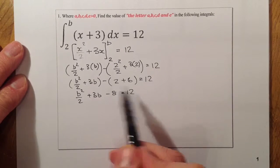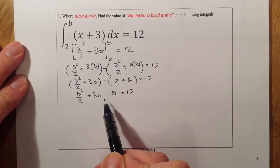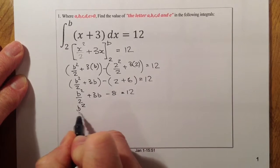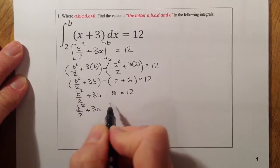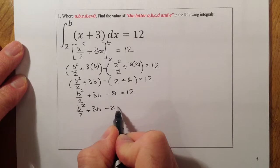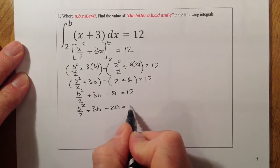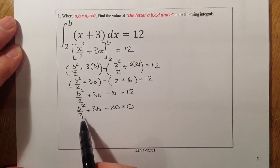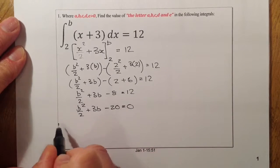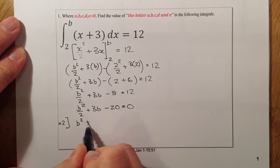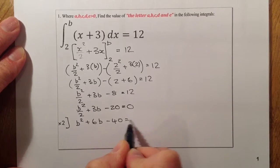From there I can gather all the numbers to the left-hand side and make it equal to 0 so I can solve this. So I've got B squared over 2 plus 3B, and taking the 12 over to this side gives minus 20, equals 0. I'll then remove the fraction by multiplying everything by 2, giving B squared plus 6B minus 40 equals 0.